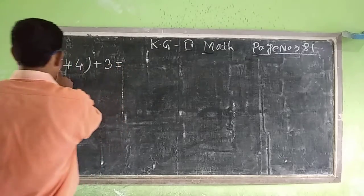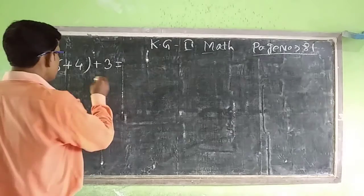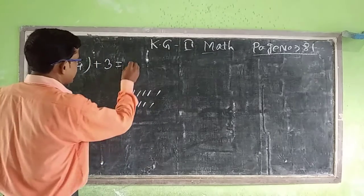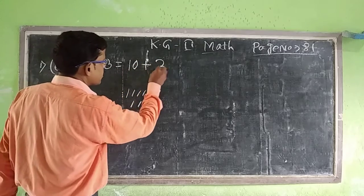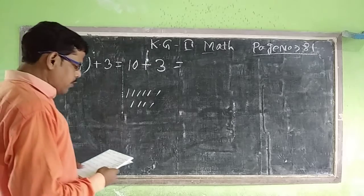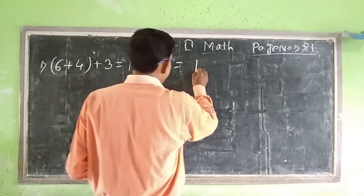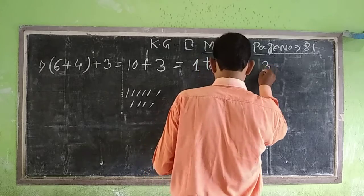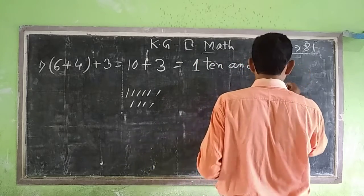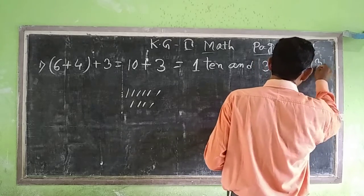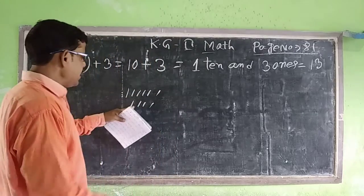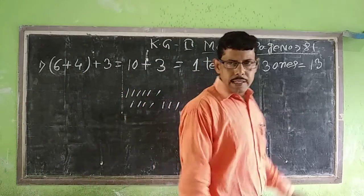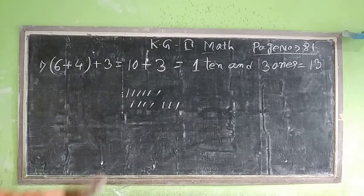6 plus 4 is equal to... counting: 1, 2, 3, 4, 5, 6, and 1, 2, 3, 4. 6 plus 4 is equal to 6, 7, 8, 9, 10. 10 and 3 is equal to... 1 ten and 3 ones is equal to 13. This means 10 plus 3. Again, 1, 2, 3, 4, 5, 6, 7, 8, 9, 10, 11, 12, and 13. Clear.